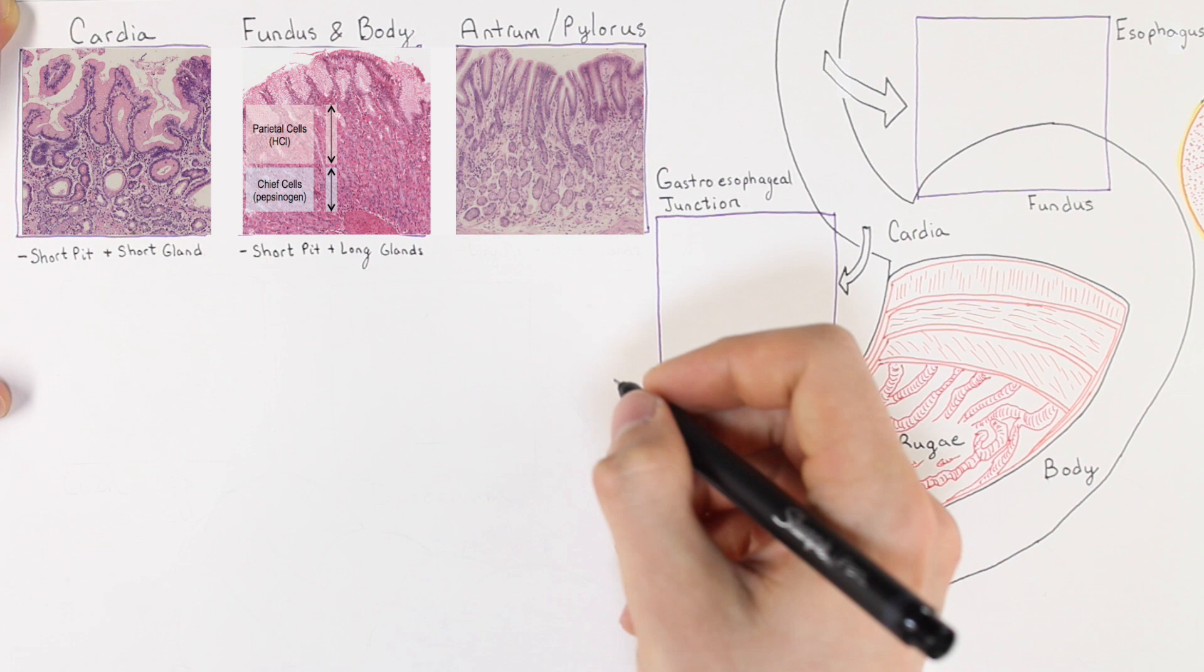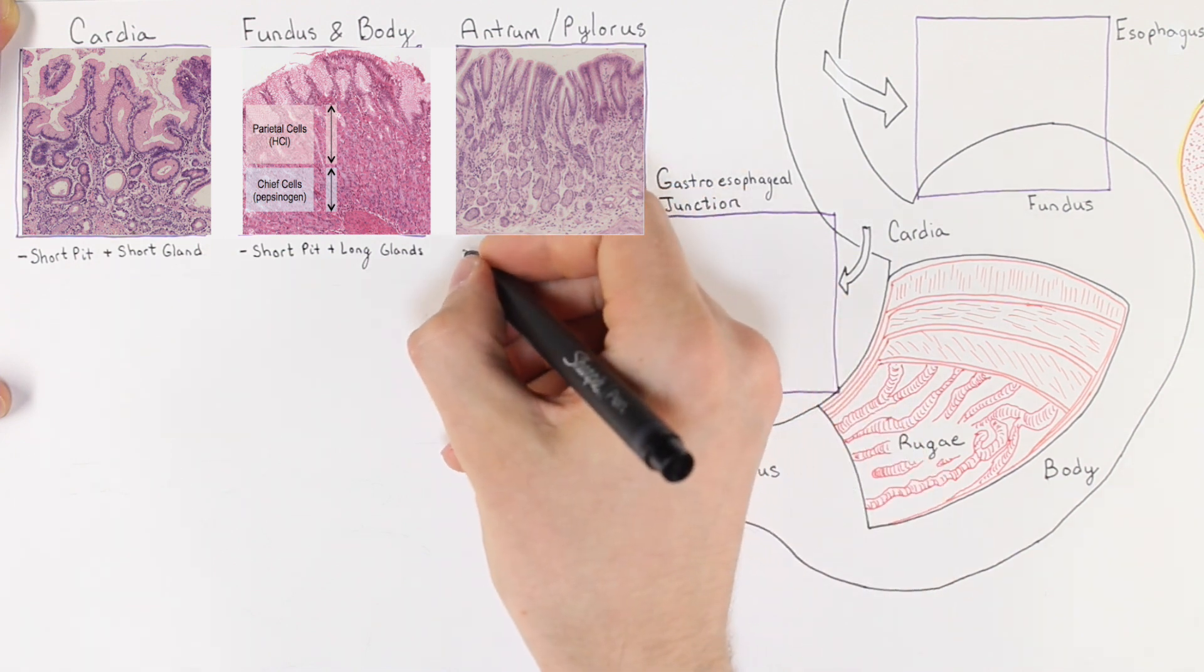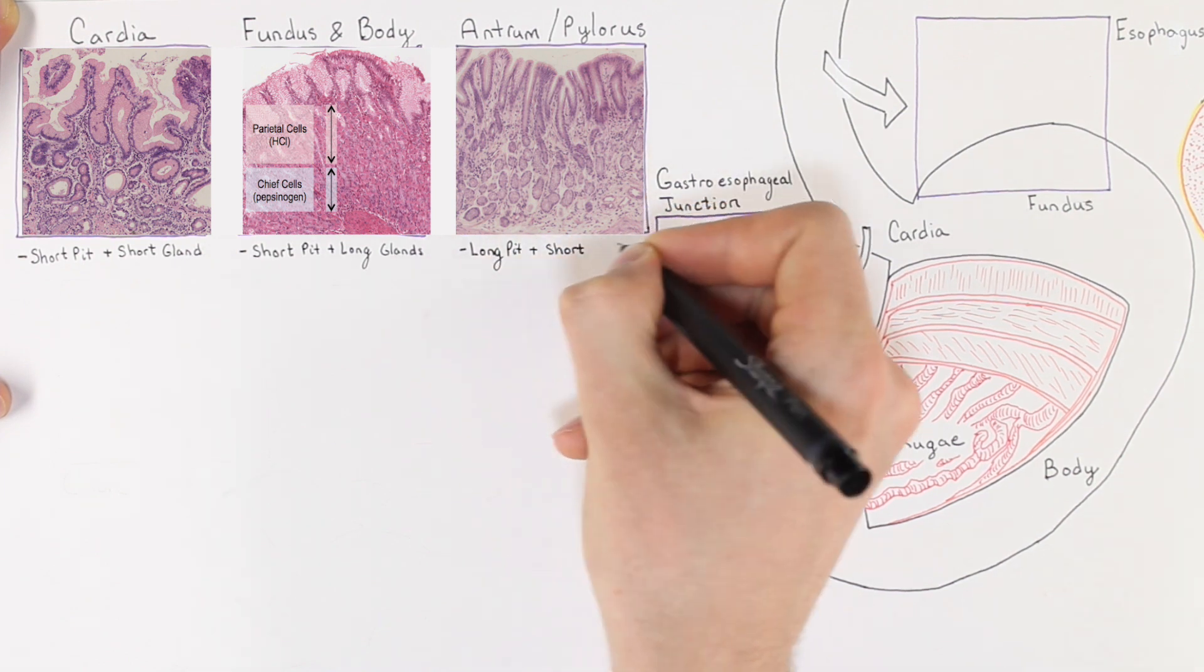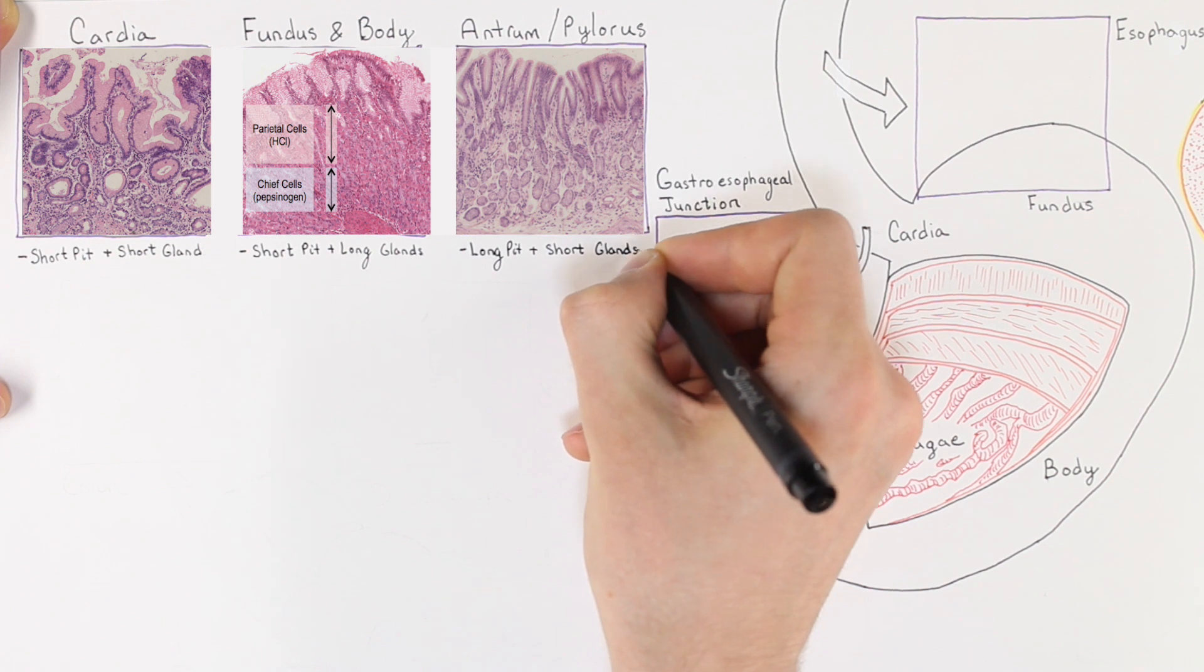Chief cells sit towards the bottom of the glands, are more blue, and assist in digestion by secreting an enzyme called pepsinogen that is cleaved to form pepsin in the acidic environment of the lumen of the stomach. On the right is a slide of the antrum or pyloric region, and this part of the stomach contains long pits and short glands that just contains mucus cells.